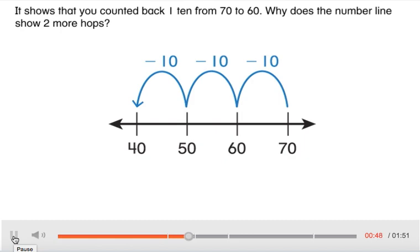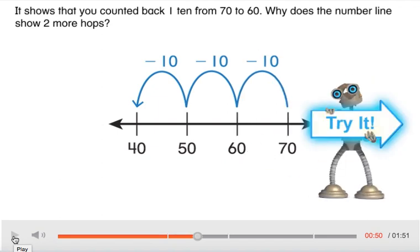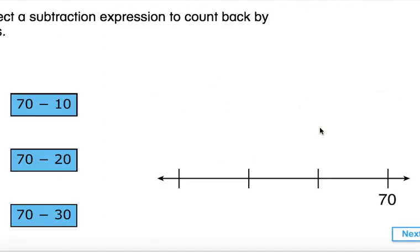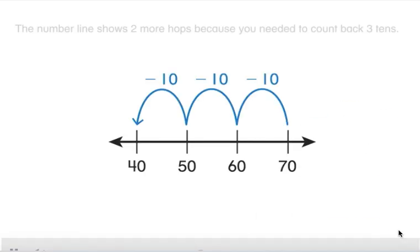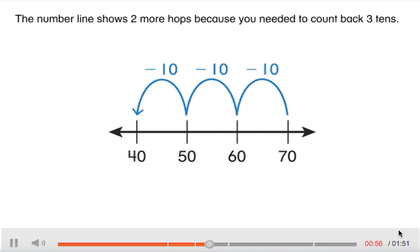Why does the number line show two more hops? The number line shows two more hops because you needed to count back three tens.